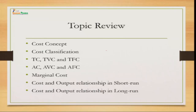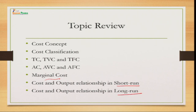Now for our review: today we talked about cost — what cost is, the different classifications of cost, the concept of total cost, total variable cost, and total fixed cost. We then covered average cost, average variable cost, average fixed cost, marginal cost, and the relationship of cost and output in both the short run and the long run, and how to reach the optimum point.